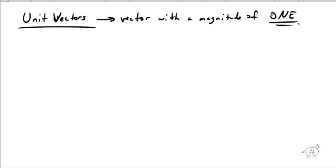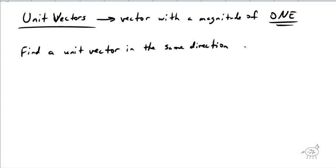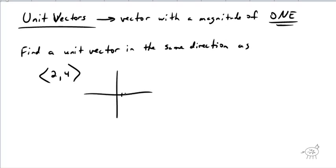The first type of question is going to say: find a unit vector in the same direction as ⟨2, 4⟩. Here's a vector — you can figure out the length of it, but I want a vector that points the exact same way. If I graph this vector at ⟨2, 4⟩, it goes like that. And I want a vector pointing the exact same direction, but only 1 unit long.